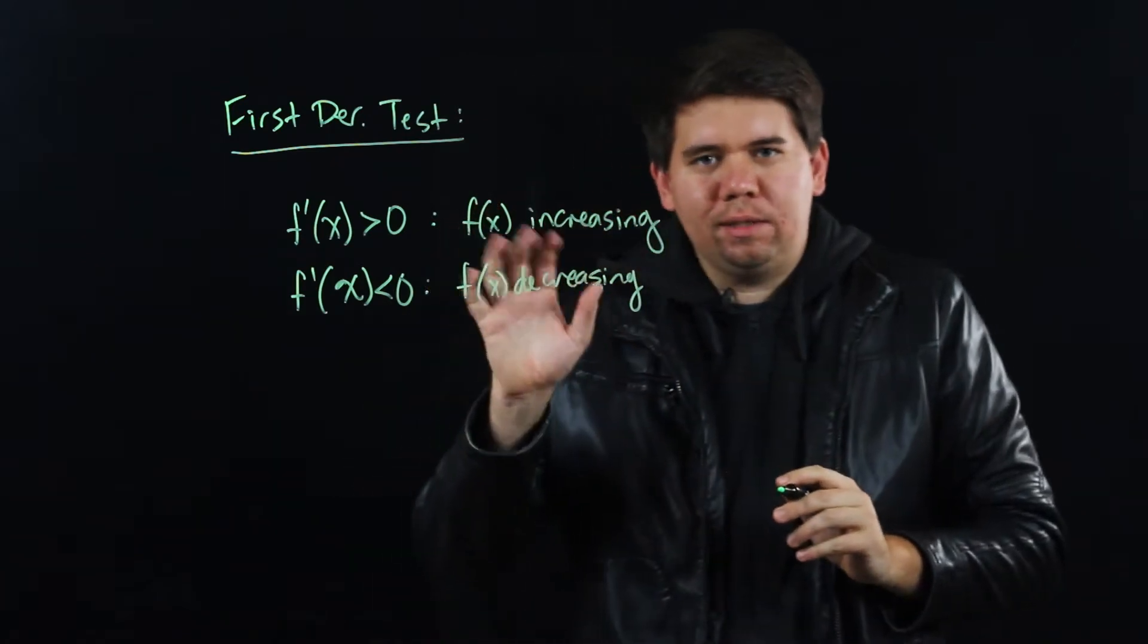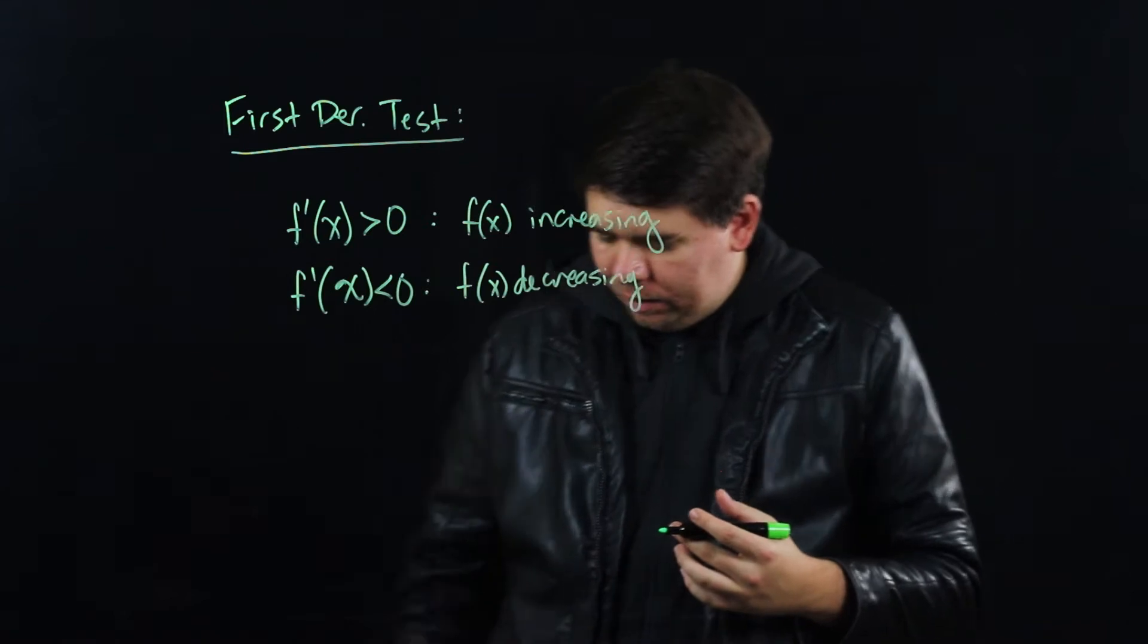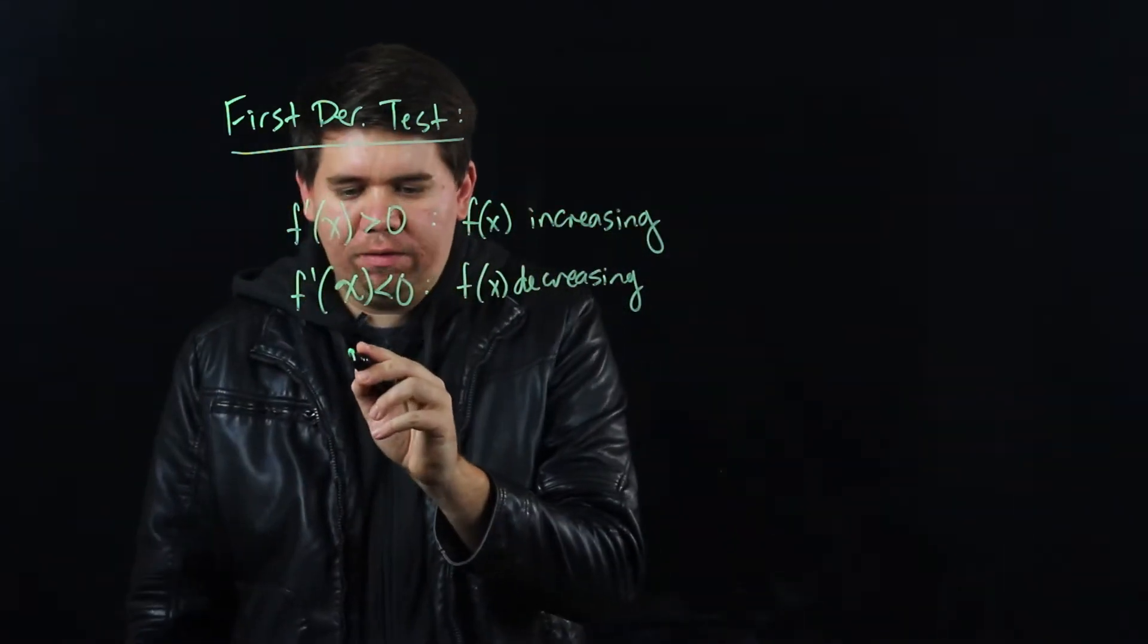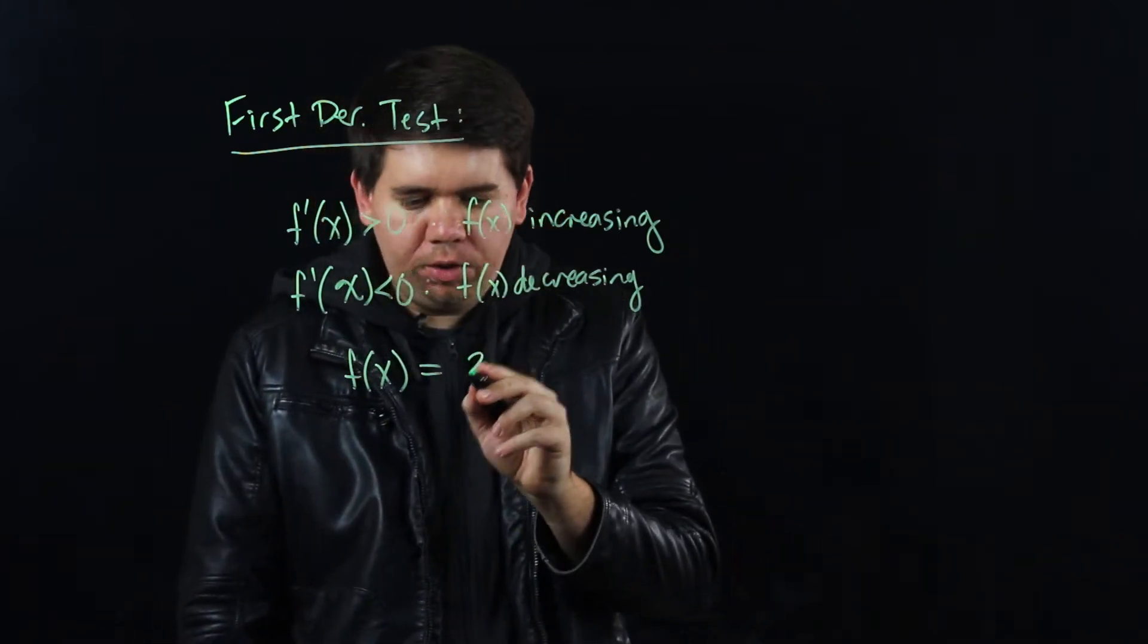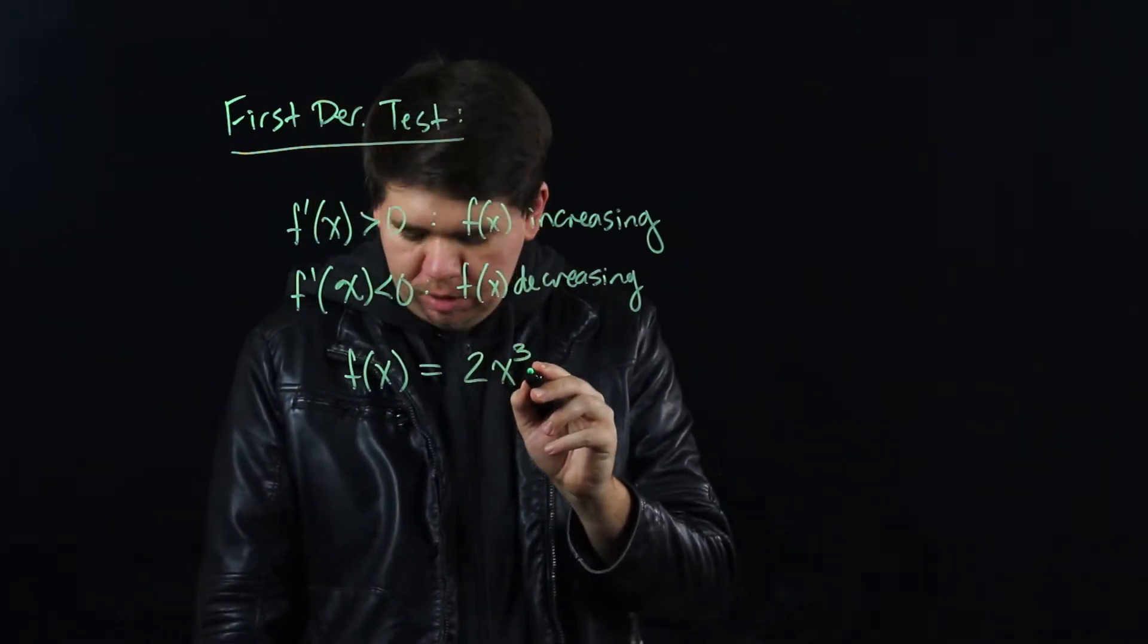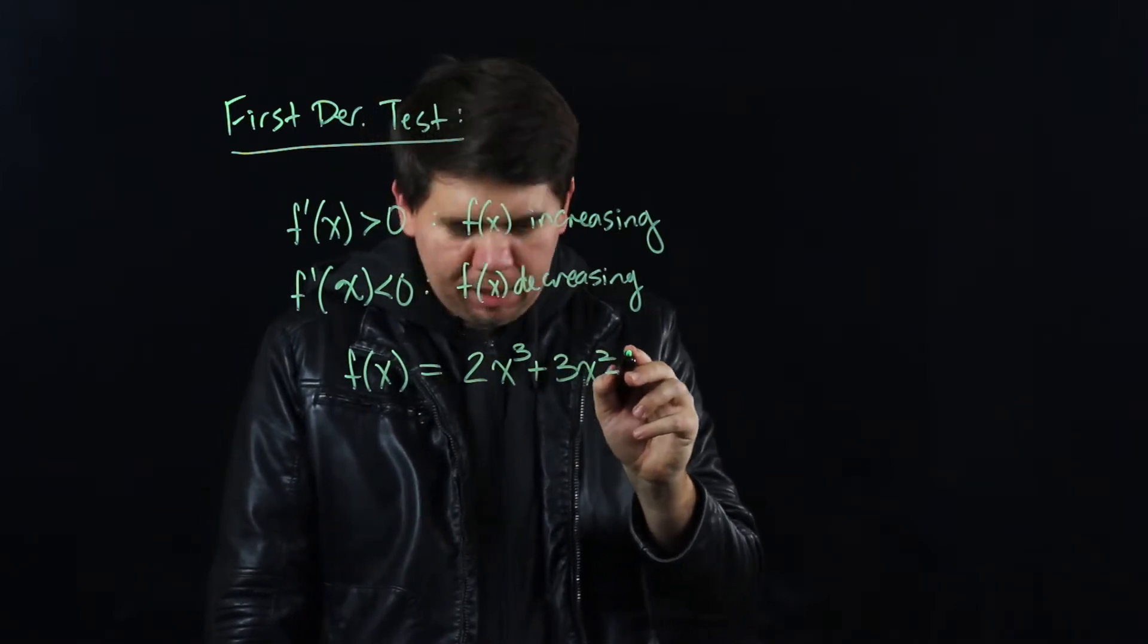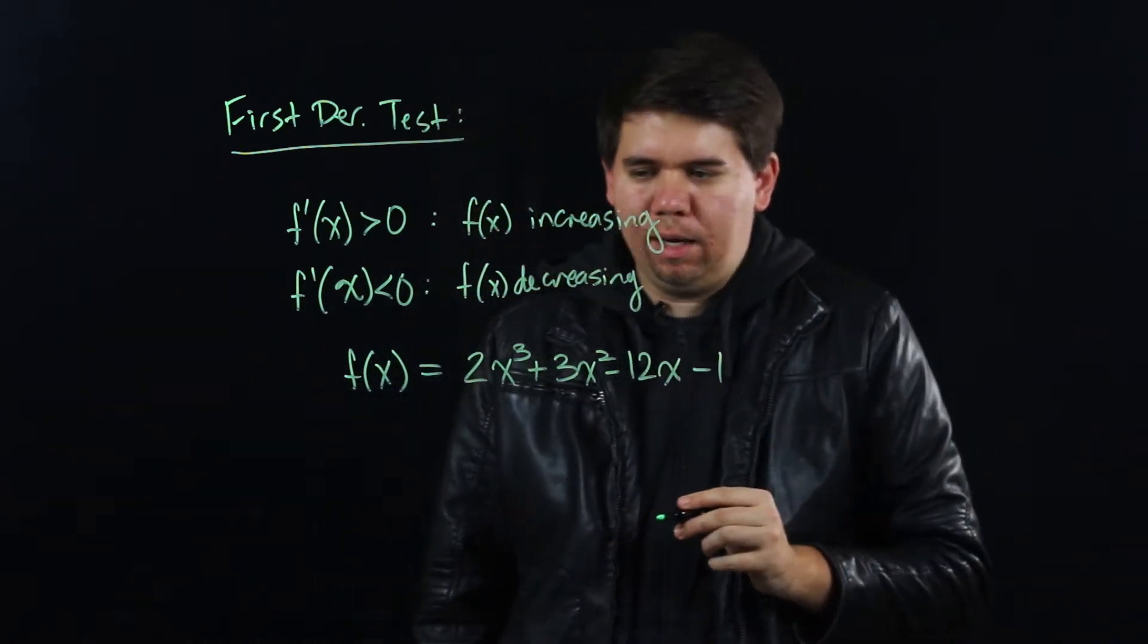Let's use this insight to analyze a function and begin to see the first derivative test in action. So we'll think once more about this function. Let's consider the function f(x) is equal to 2x³ + 3x² - 12x - 1.